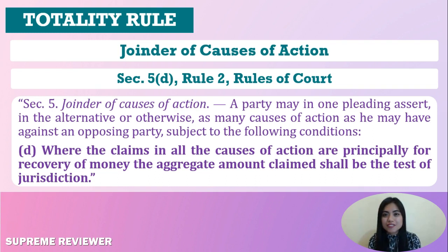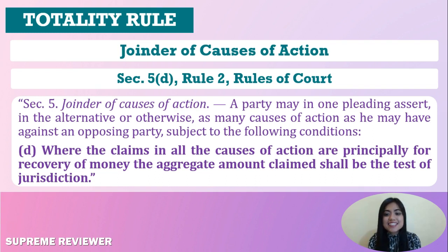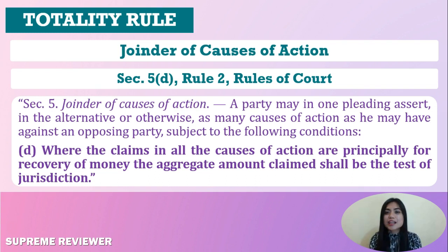Take note that if there is one plaintiff against one defendant, the provisions of Section 5 of Rule 2 allow a party to assert in one pleading as many causes of action as he may have against an opposing party, provided he does not join special civil actions or those subject to special rules. Where there are several plaintiffs or defendants, joinder of causes of action requires compliance with the rule on joinder of parties, which requires the same transaction or series of transactions.